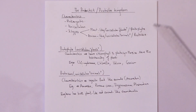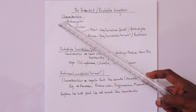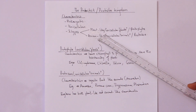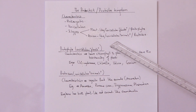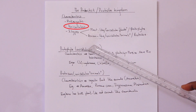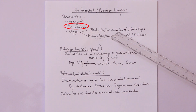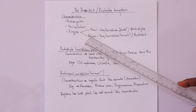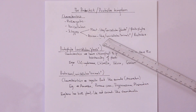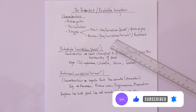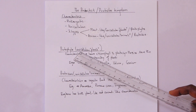All the organisms in the Protoctist kingdom are eukaryotes and they are all unicellular. There are two types of organisms in this group: one type has plant-like characteristics and the other has animal-like characteristics. The plant-like ones are also known as Protophyta, and the animal-like ones are known as Protozoa.